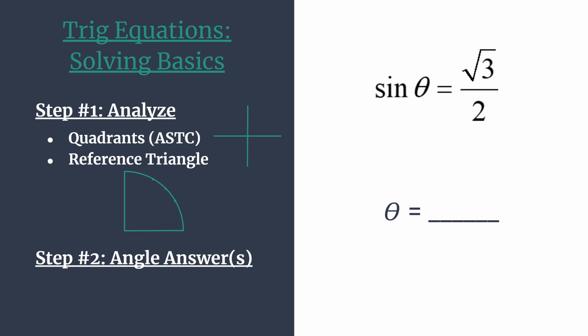So let's start by looking at the quadrants. This is our first bit of analysis. The acronym ASTC, think all students take classes, tells us which trig functions are positive in each quadrant. So label your quadrants like this, starting in quadrant one, ASTC.